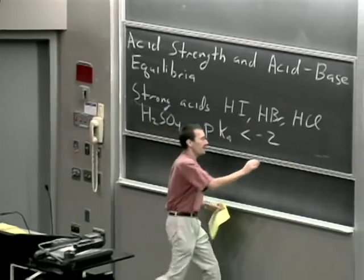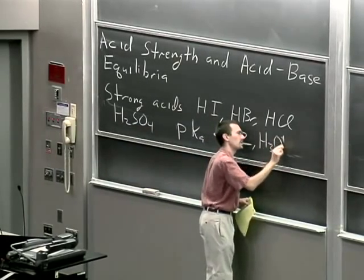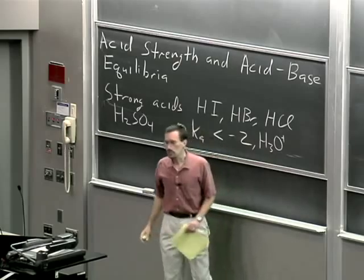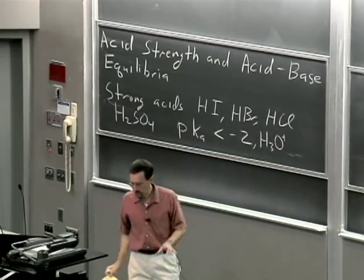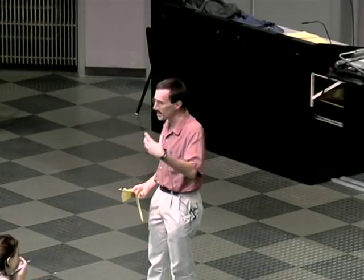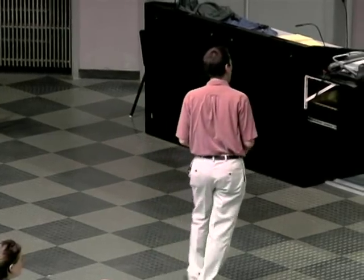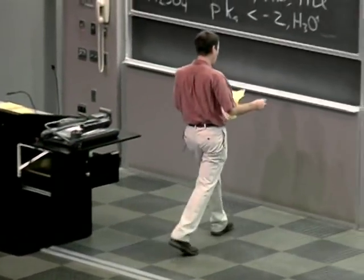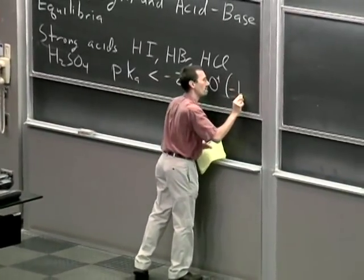By comparison, let me put up H3O+, and this is an important compound. You can't buy a bottle of H3O+ — you'd need a counter ion. But H3O+ is what you get when you dissolve a strong acid in water; you also get the counter ion. If you dissolve HCl in water, it essentially fully dissociates to hydronium ion, H3O+, and chloride anion.